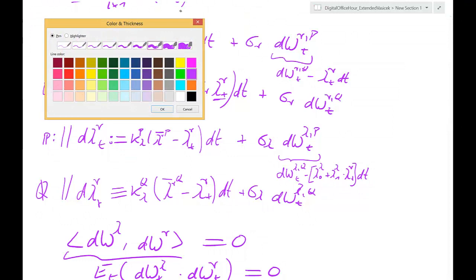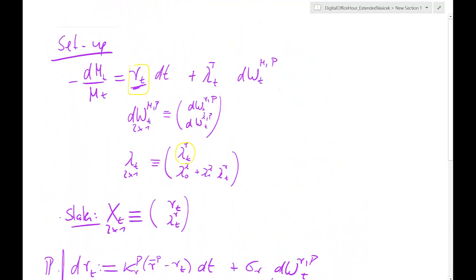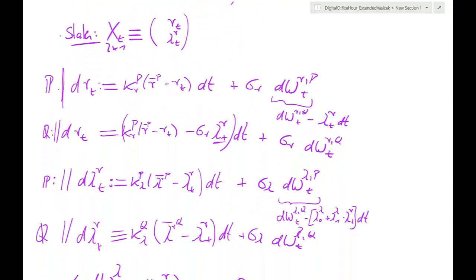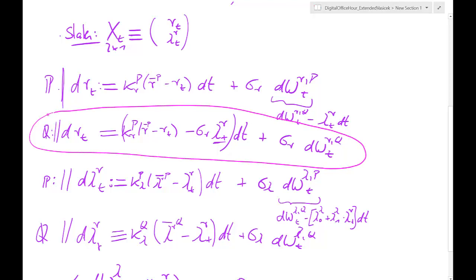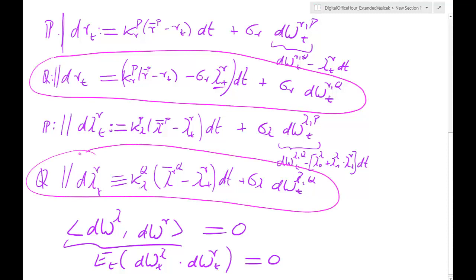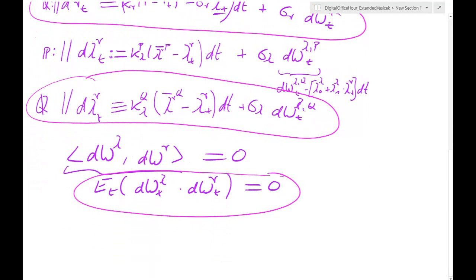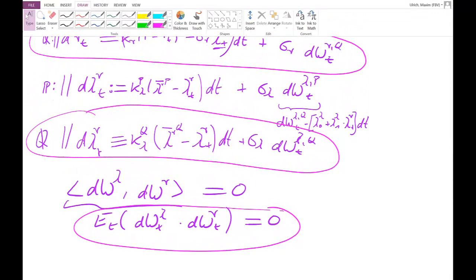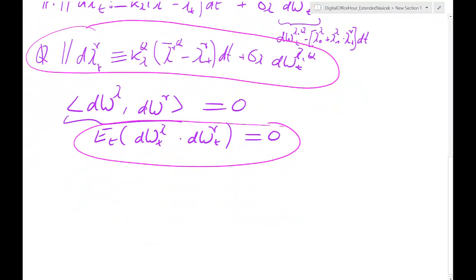Let's highlight the important equations. We are going to price a bond under Q. We will need the Q-dynamics: under Q we have risk premium adjustments and market price of risk adjustments. We need the dynamic of λ_t under Q, which we've derived above. Both shocks are uncorrelated with each other. So now we are going to price a bond — the entire term structure of bonds.